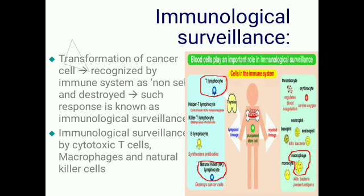The next topic is immunological surveillance. Whenever a normal cell is transformed into a cancer cell, this transformed tumor cell is recognized by our immune system as non-self and is destroyed. This response is known as immunological surveillance, carried out by cytotoxic T cells, macrophages, and natural killer cells.